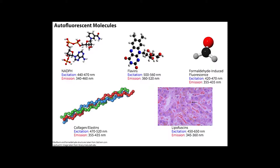Here's this handy chart for autofluorescent molecules. You can see there are reduced pyridine nucleotides — NADH and NADPH — oxidized flavins, FAD, and lipofuscins, which are a granular yellow-brown pigment resulting from the breakdown and absorption of damaged red blood cells, also known as the aging pigment. Collagen and elastins can also contribute. For samples treated with formaldehyde fixatives, the cross-links generated can also create autofluorescent molecules — another reason to avoid over-fixing your samples.